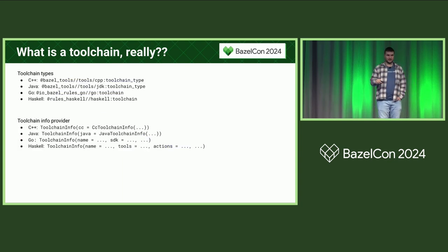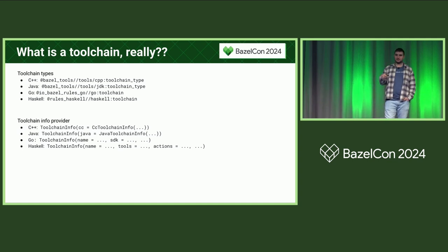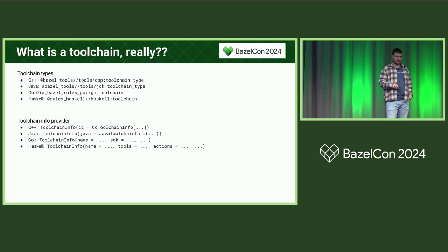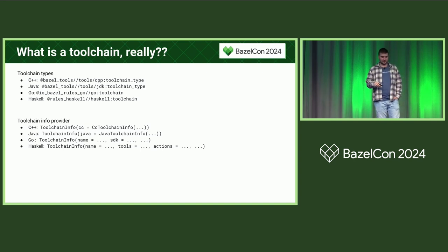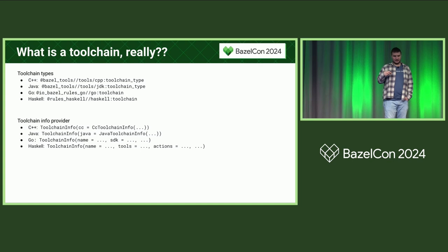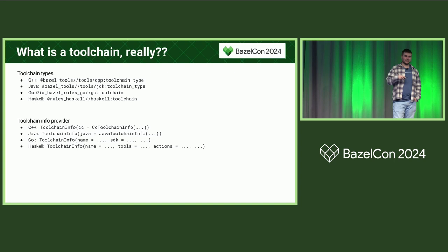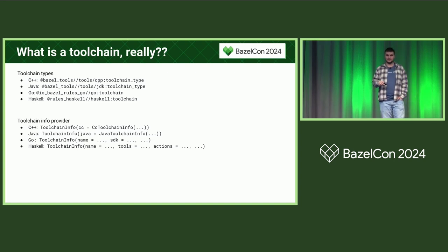There are two things that are important when you use a toolchain. First, there are toolchain types — they differentiate between different toolchains. So if you have a C++ toolchain and want to use it in your rule, you use one toolchain type, and for Java, a different one. This matters both when using a toolchain and when declaring an instance of one. The second thing is the toolchain info provider — the information you get in the rule implementation for a specific toolchain instance.